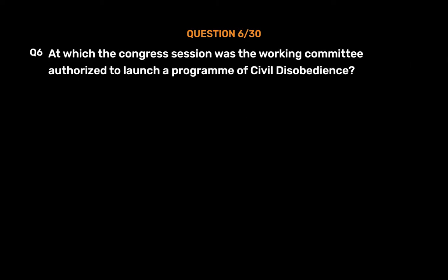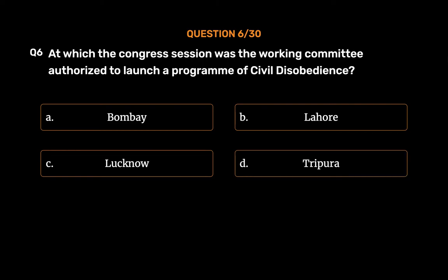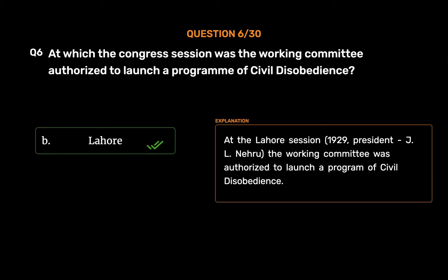Question No. 6. At which Congress session was the working committee authorized to launch a program of civil disobedience? Option A, Bombay; Option B, Lahore; Option C, Lucknow; Option D, Tripura. The correct answer is Option B, Lahore. At the Lahore session, 1929, under President J.L. Nehru, the working committee was authorized to launch a program of civil disobedience.